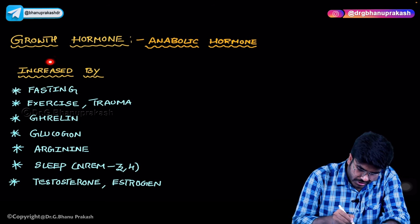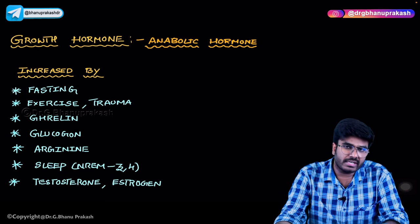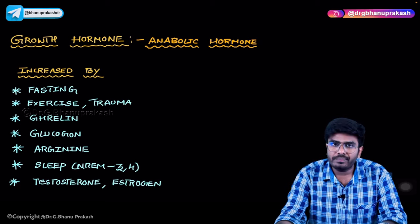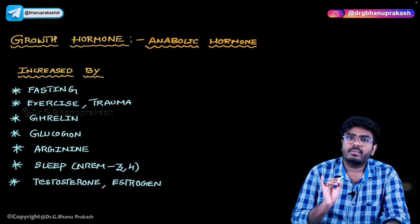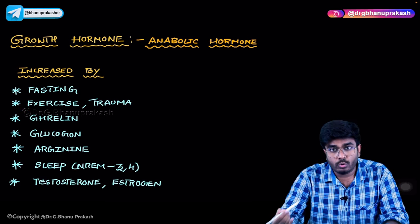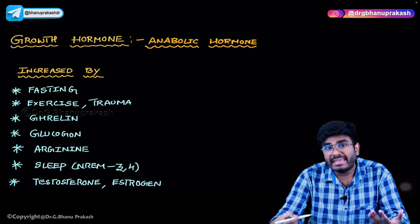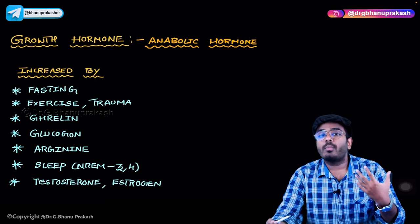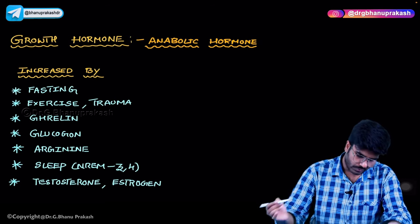Growth hormone production is increased during fasting. During fasting, blood glucose levels fall, so growth hormone rises, acts on the liver, and increases blood glucose levels. Similarly, during exercise and trauma, we need glucose — for physical activity and for body healing — so growth hormone levels are increased in both those conditions as well.